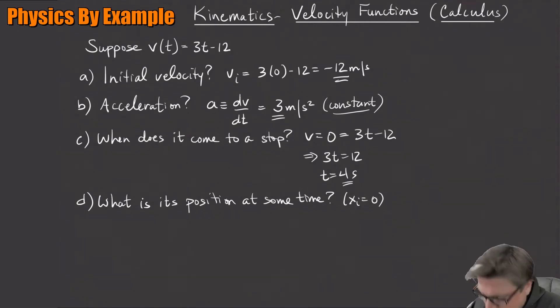If v is defined as dx/dt, then that means that x is the integral of v dt. So this is going to be the integral of 3t minus 12 dt.